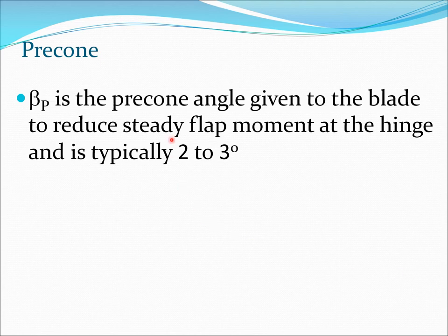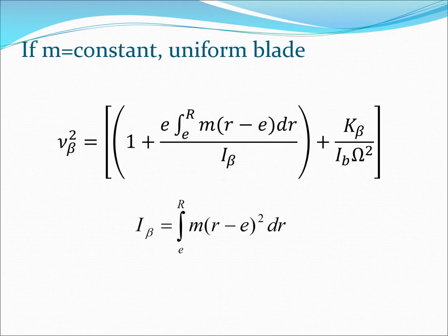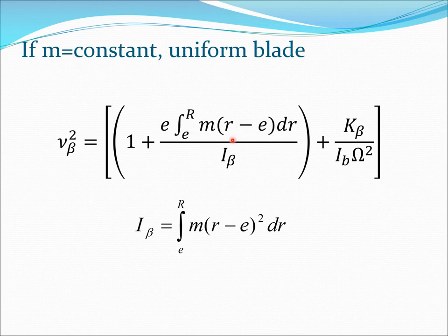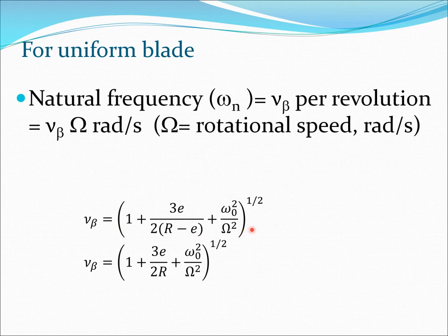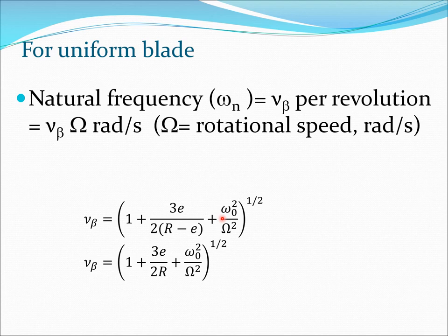Beta_p is the pre-cone, given to the blade to reduce the steady flap moment at the hinge — typically 2 to 3 degrees. For the case where mass is constant, m can be taken outside the integrals, making them straightforward to evaluate. The simplified result gives nu_beta equals the square root of 1 plus (3e)/(2(R minus e)) plus the spring stiffness term k_beta. To get the frequency in radians per second, multiply the per-rev value by the rotation speed in radians per second.